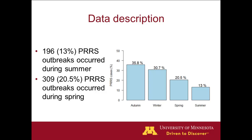In this entire database of 1,500 outbreaks, we have around 200 that occur during summer and another 300 during spring. Together, roughly one-third of outbreaks occur during spring and summer, and the other two-thirds in autumn and winter. Autumn is still the season where the most outbreaks are reported to us.